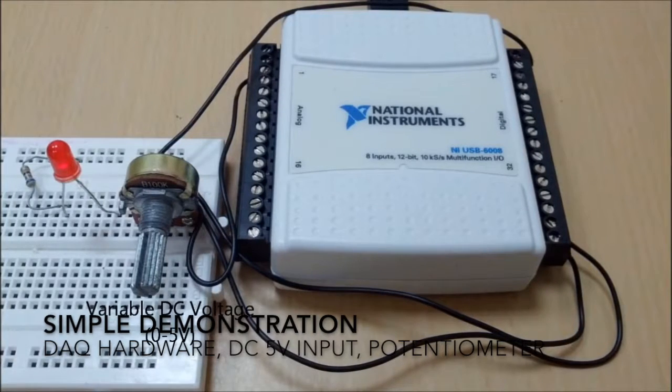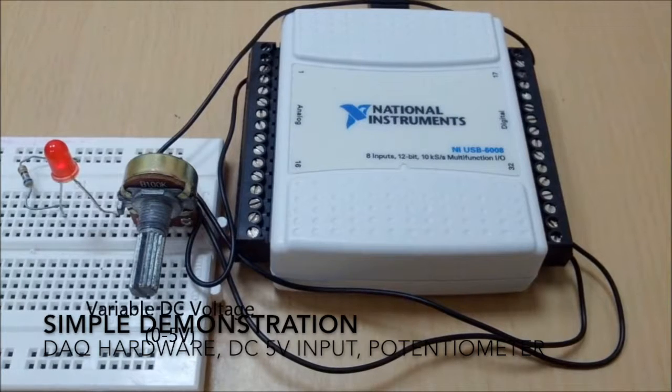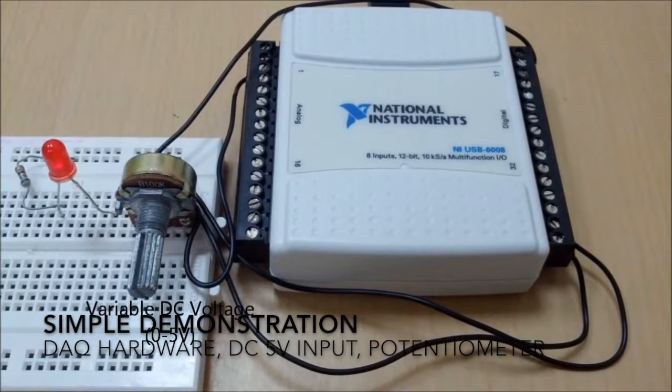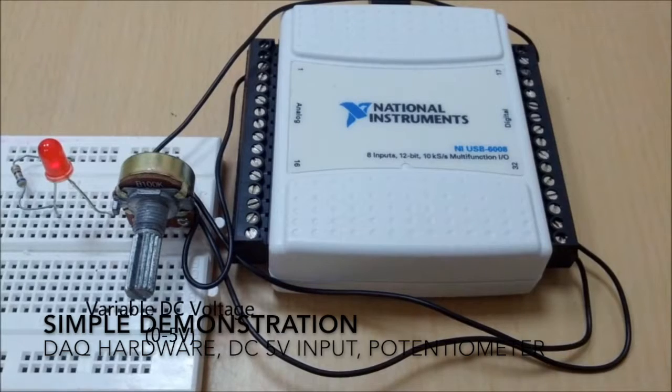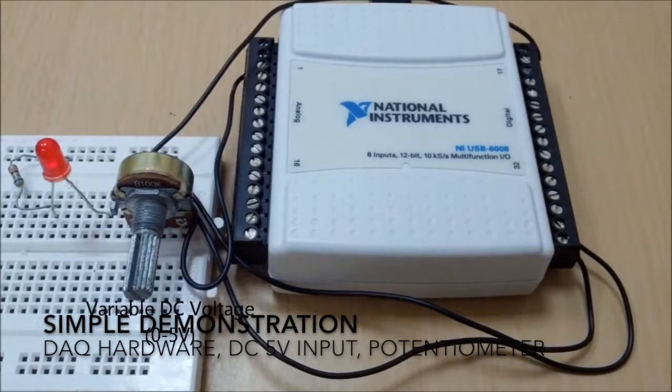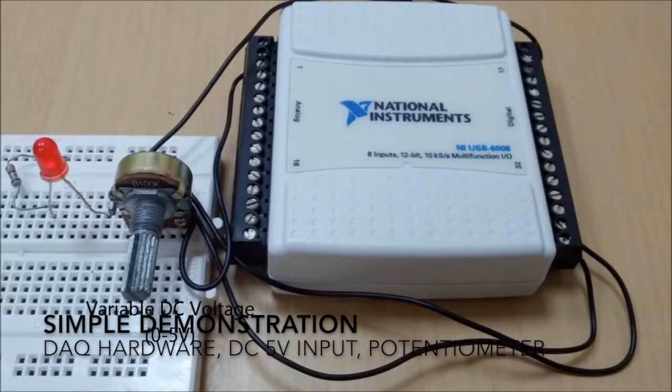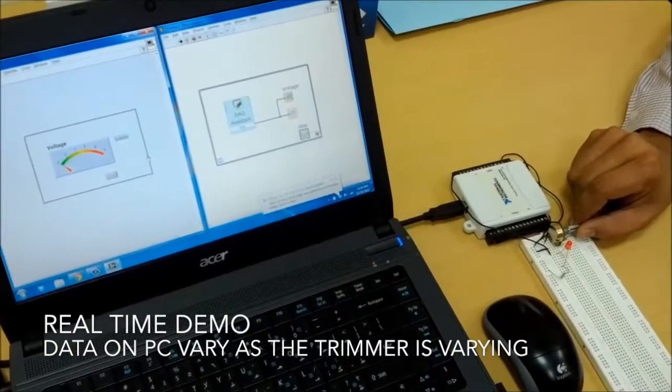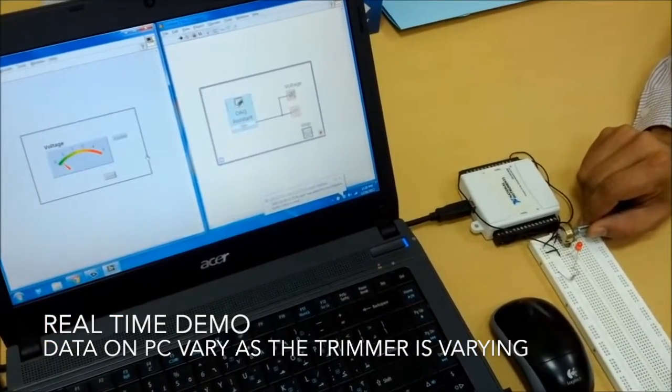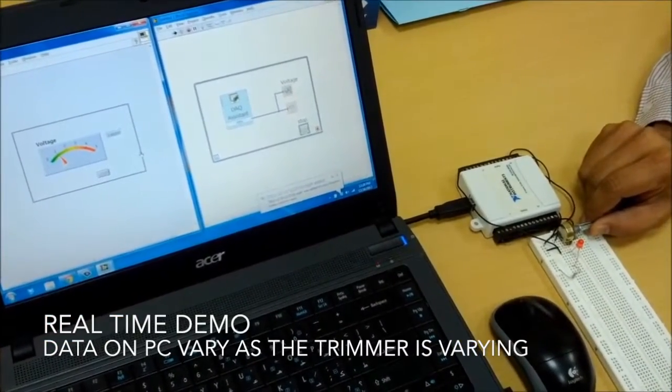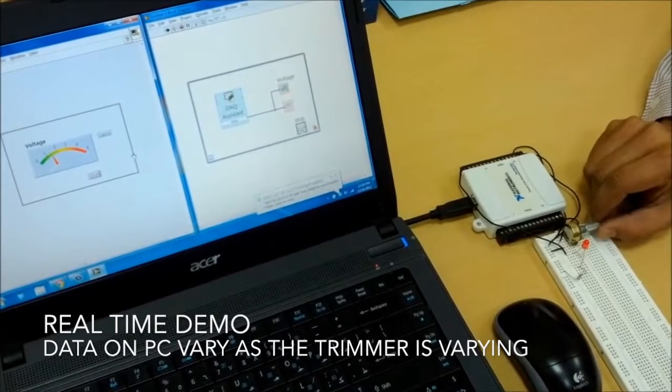A variable DC supply is used to give a voltage between 0 and 5 volts DC. The output voltage is connected to one of the analog inputs of the DAQ. This video shows how the interface circuitry is connected to LabVIEW.